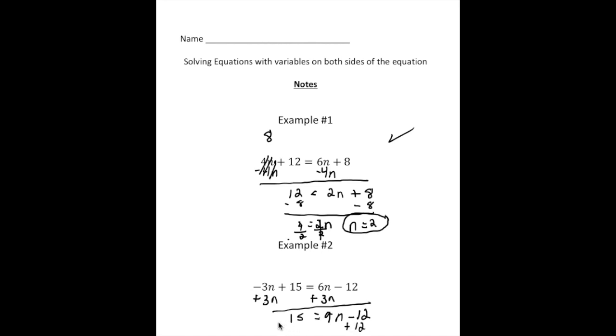And then I'm going to add 12 to both sides. That's the constant. These cancel out. I'm going to continue over here. So 15 plus 12 is 27 equals 9n. And what's the next step? That's right. You're going to divide both sides by 9.